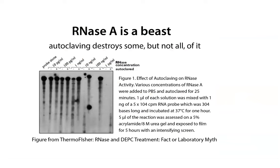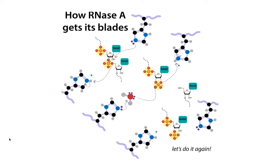Let's look at RNase A — a biochemist's biggest enemy. RNase A is an RNA endonuclease that's basically ubiquitous. It's secreted by many things to protect against invading RNA viruses. Unfortunately in the lab, this RNase A is everywhere and can chew up RNA you're trying to study — and it's incredibly hard to destroy. Autoclaving only destroys some, not all of it.